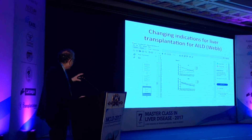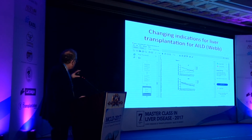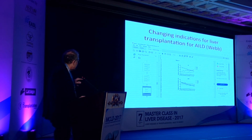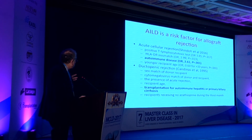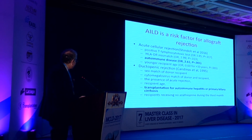Finally, I want to touch upon transplantation. The indications for transplantation are changing in the UK and USA. In the UK, we're seeing a decline in PBC patients and an increase in PSC. In the US, there's a relative decline in all three autoimmune diseases. How can liver transplantation inform the understanding and treatment of autoimmune liver disease? If you're transplanted for autoimmune liver disease, you are at greater risk of not only acute cellular rejection, but also ductopenia rejection. Autoimmune liver disease is associated with an increased risk of allograft rejection, both acute and chronic.